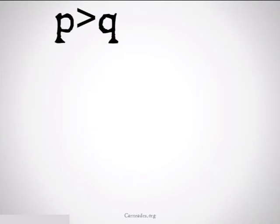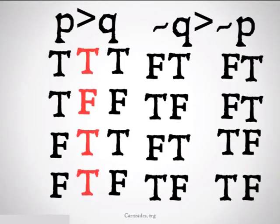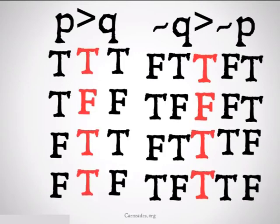Let's take a look at the truth table. P implies Q; therefore, not Q implies not P. We fill in the trues and falses below, and we discover that they are a perfect mirror image — they are only false in the second row. So this is a valid form of argument, and we can replace them salvo veritate.